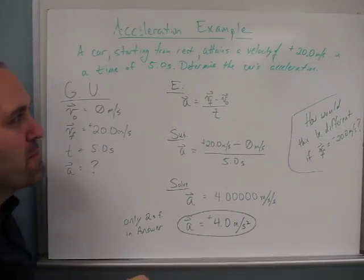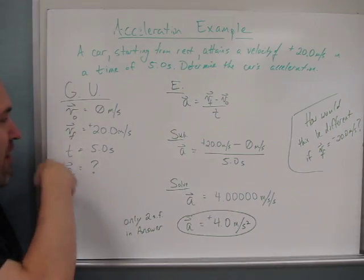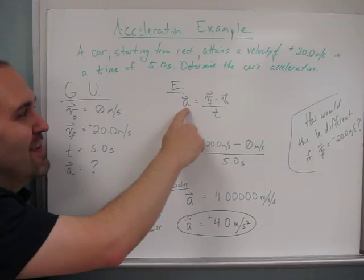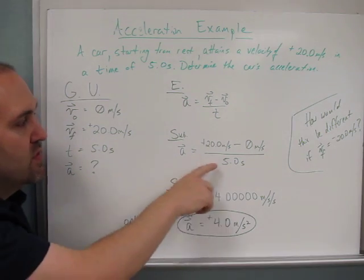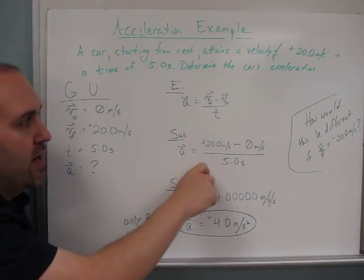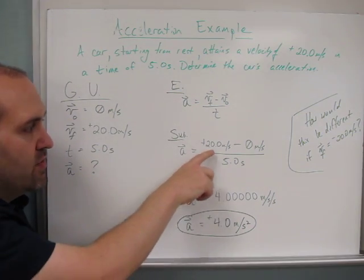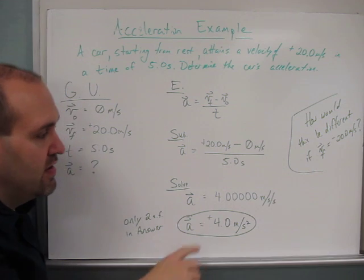The equation that we're going to use hopefully contains these four pieces, and that equation is the equation that was on the previous slide. Then we substitute the values that we know, so 20 for final, 0 for original, 5 for time. And then we divide: 20 minus 0 is 20, and 20 divided by 5 is 4.